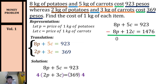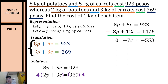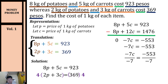To eliminate variable p, we subtract our equations. 8p minus 8p equals zero. 5c minus 12c equals negative 7c. 923 minus 1476 equals negative 553. So we have: negative 7c = negative 553. Dividing both sides by negative 7, c = 79. The price of one kilogram of carrots is 79 pesos.